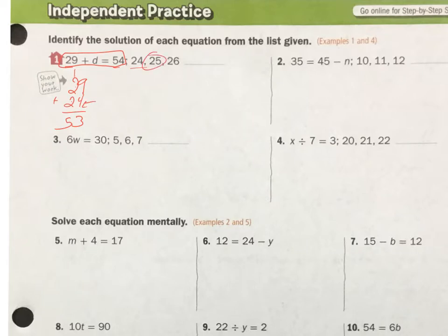I'm going to just check it because I want to make sure. 29 plus 25. 9 plus 5 is 14. And that equals 54, which is what I want. So my answer is 25.